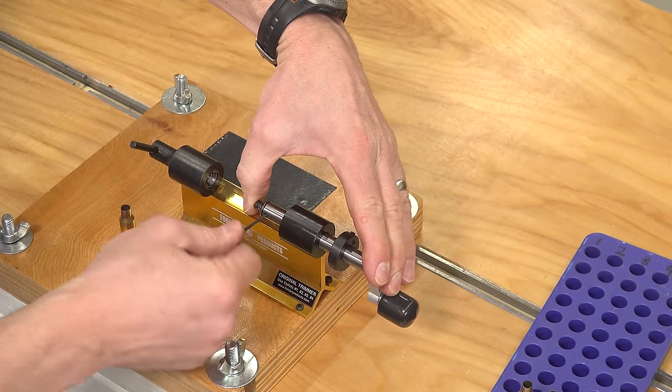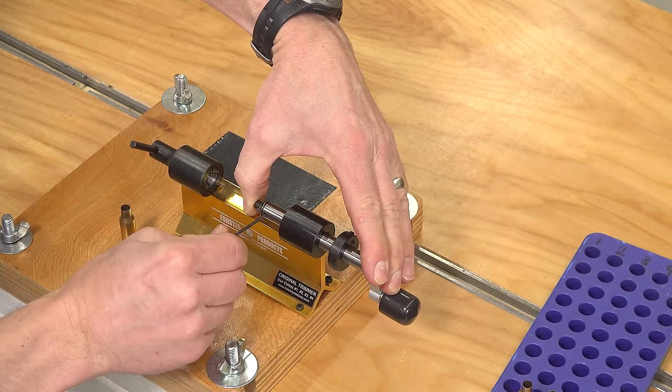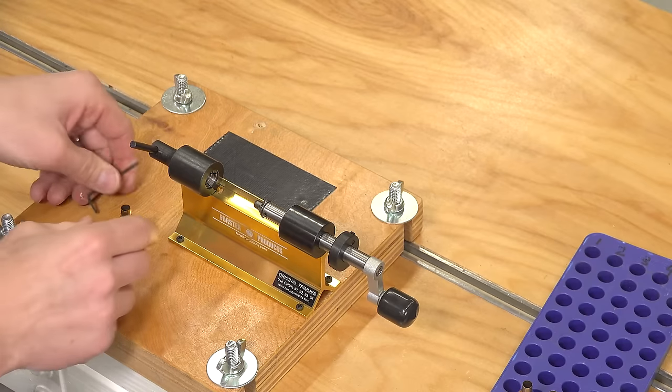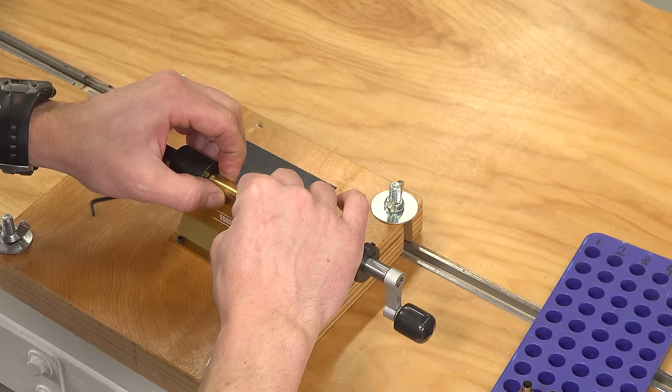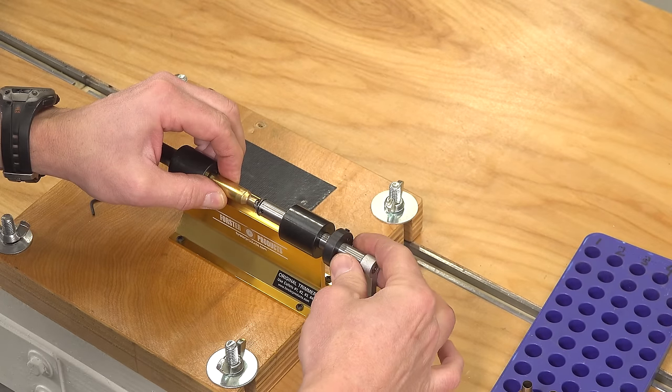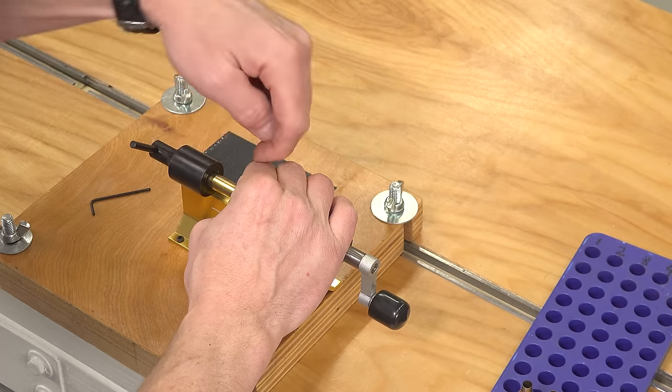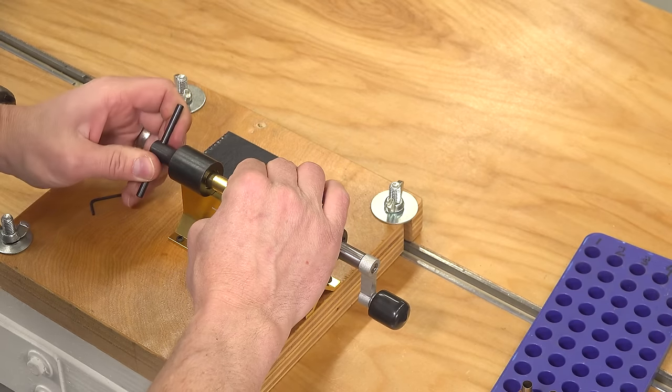Push in on this while we tighten the set screw and that's going to hold that in place. Now when we insert a case we're going to want to push into the collet and then get the pilot supporting the front of the case, push towards the collet while we clamp it down.